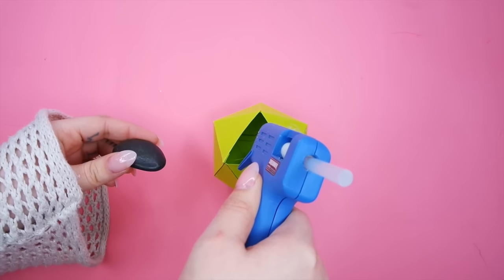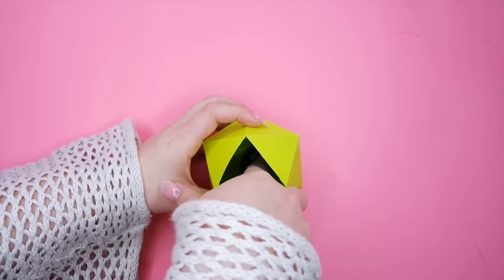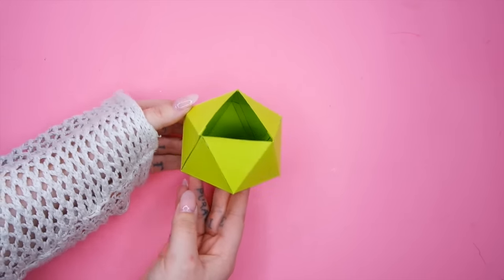The last step is to take your glue gun, put a bunch of glue in the bottom of your geometric ball, and take one of those flat little rocks and glue it in there.